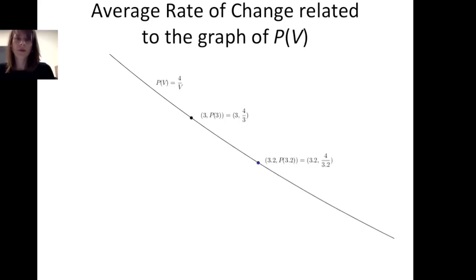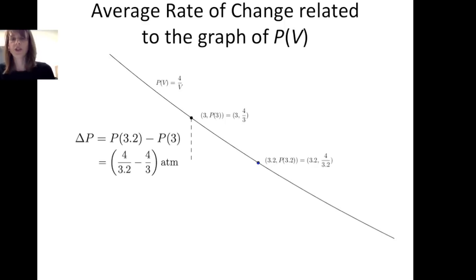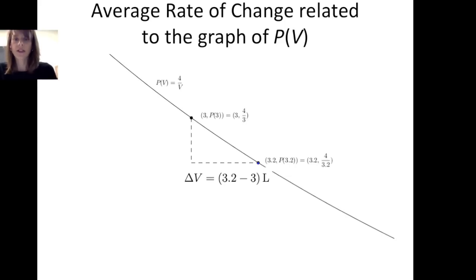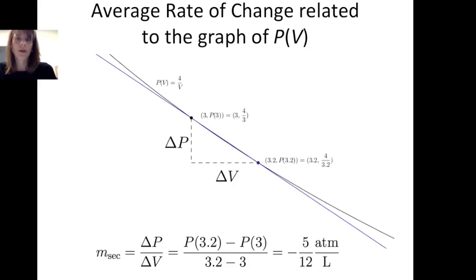Here we see a graph of the function p = 4/v, with the points (3, p(3)) and (3.2, p(3.2)). The numerator of the average rate of change — the change in pressure — is the vertical distance between those two points: 4/3.2 − 4/3 ATM. The denominator is the horizontal distance — the change in volume: 3.2 − 3 liters. So the average rate of change is the slope of the secant line connecting (3, p(3)) and (3.2, p(3.2)).